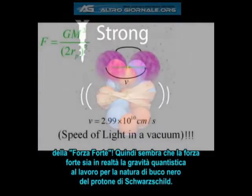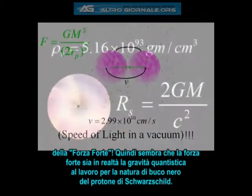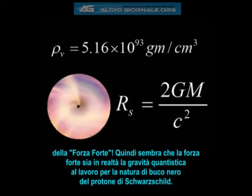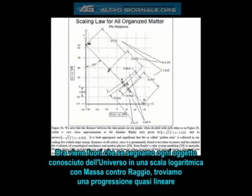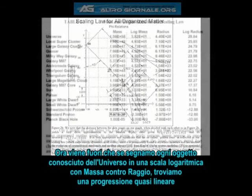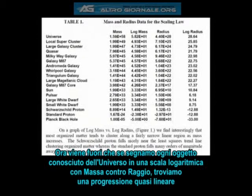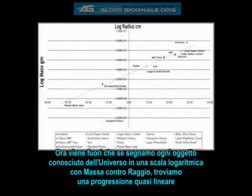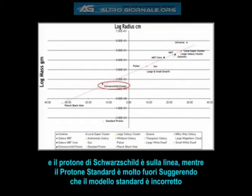So apparently the strong force is actually quantum gravity at work, due to the black hole nature of the Schwarzschild proton. If we plot every object in the known universe onto a logarithmic scale of mass versus radius, we find an approximate linear progression. Oddly enough, the Schwarzschild proton sits almost exactly on this line, while the standard model proton sits far outside, suggesting that the standard model may be incorrect.